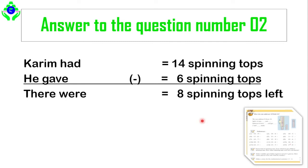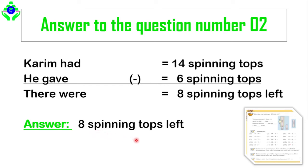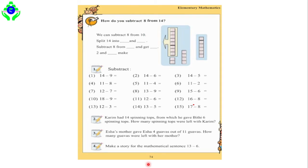So the answer to question number 2 is: 8 spinning tops were left. Dear students, I hope you were all able to solve this question. Now let's go back to our page to see what the other question is on page number 74.